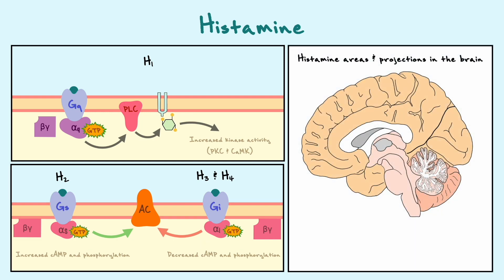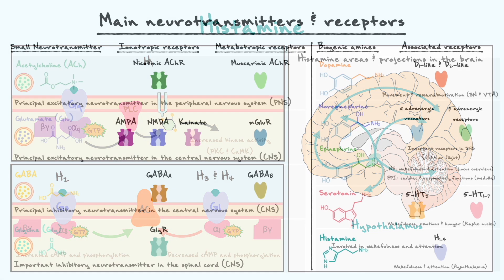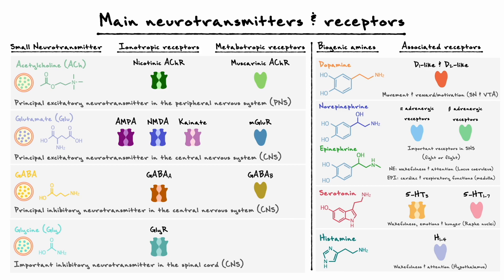In terms of its location in the brain, histamine is mostly found in neurons of the hypothalamus, and their connections mediate wakefulness and attention. In summary of all we've discussed about biogenic amines regarding their receptors and functions, you can refer to this to get a general overview.